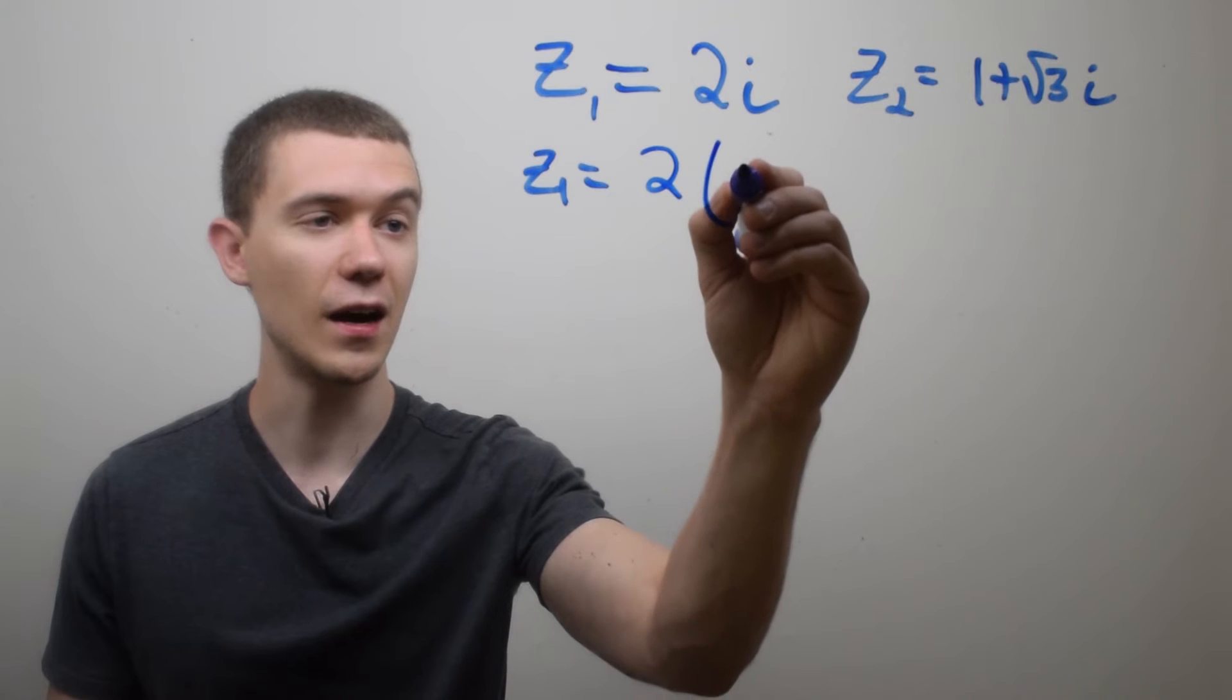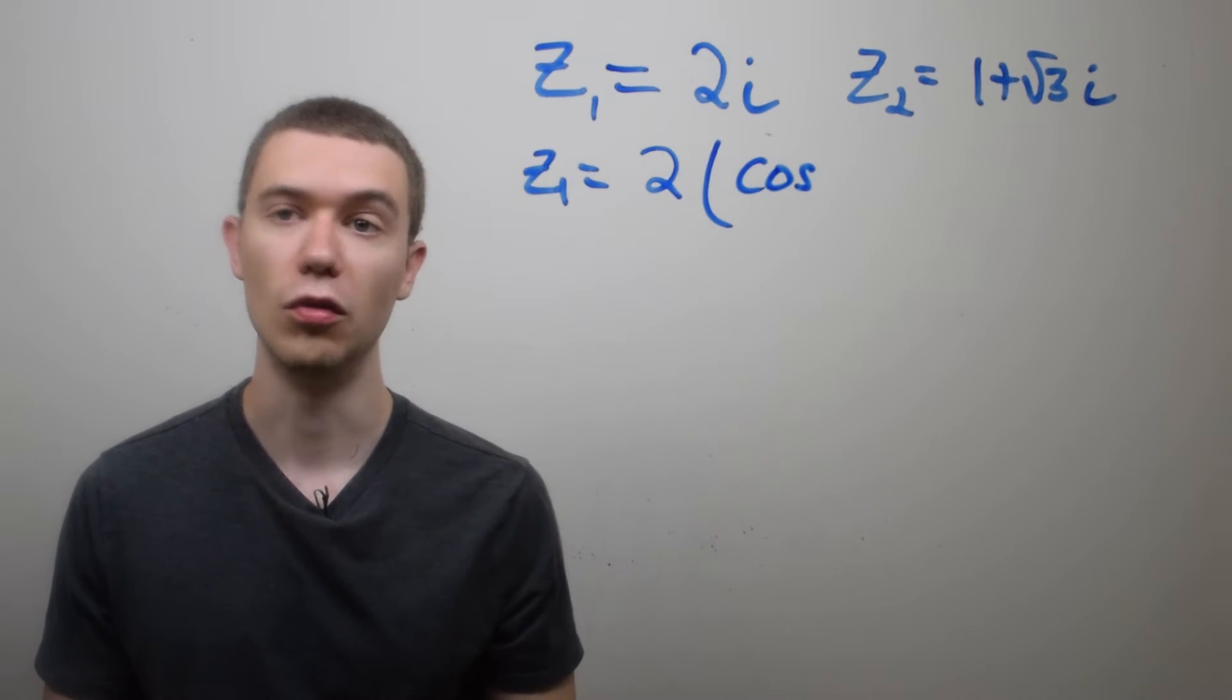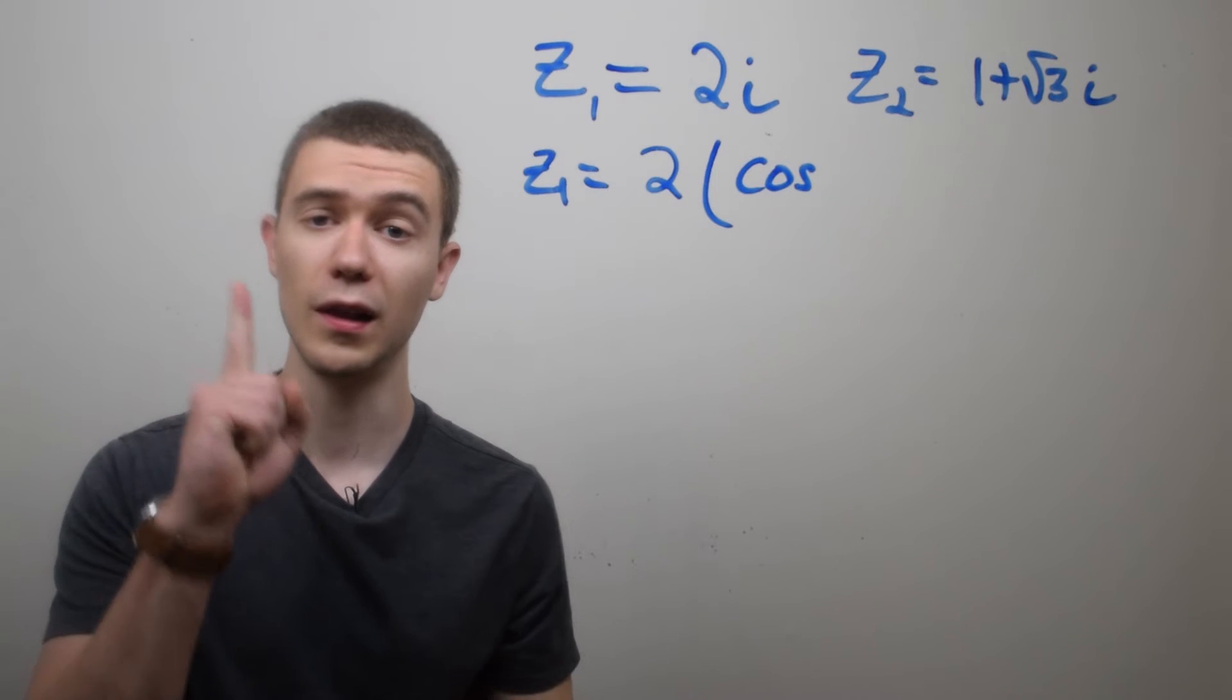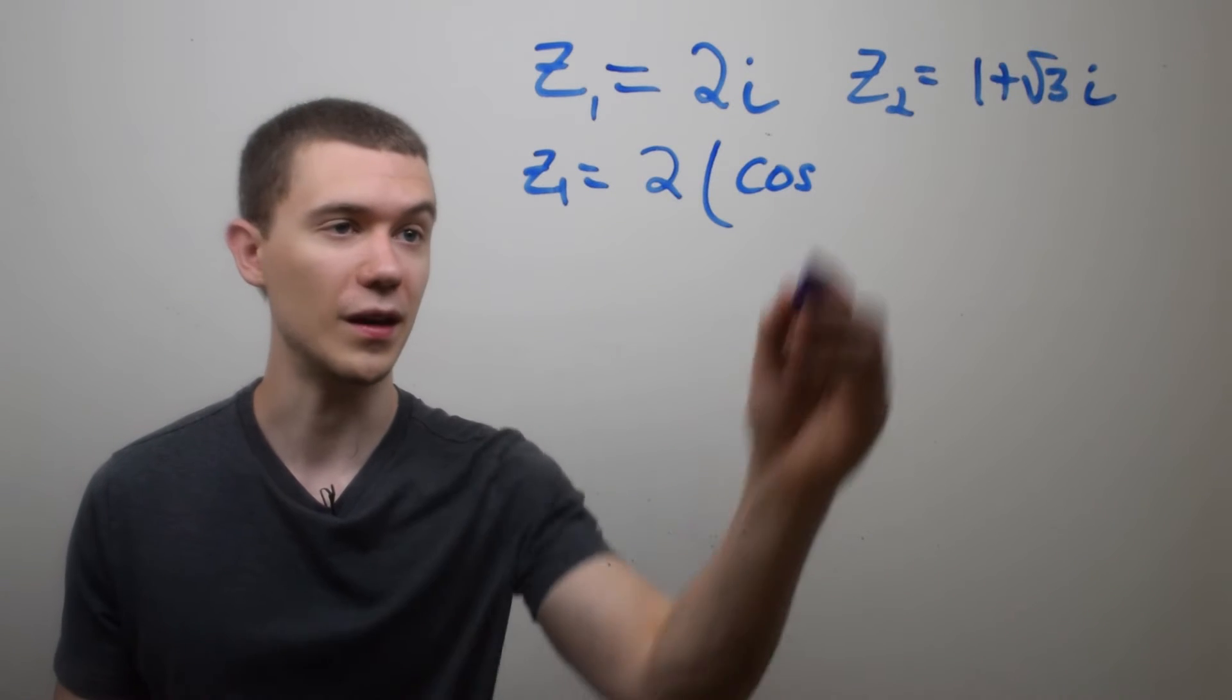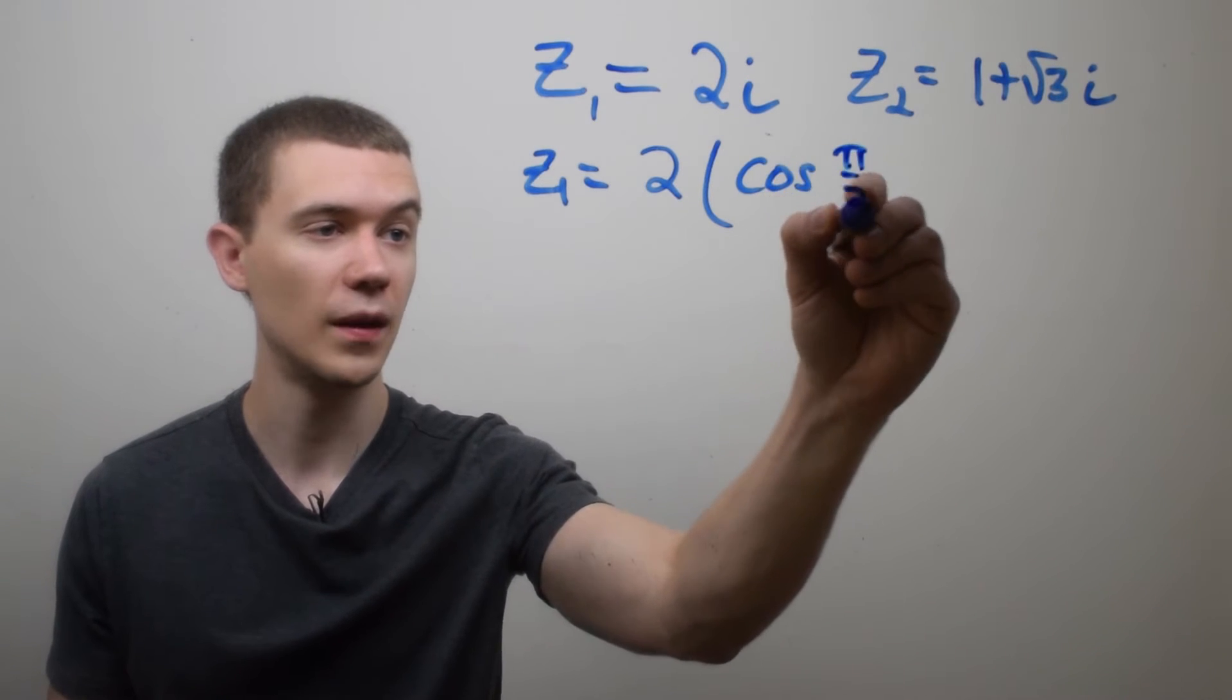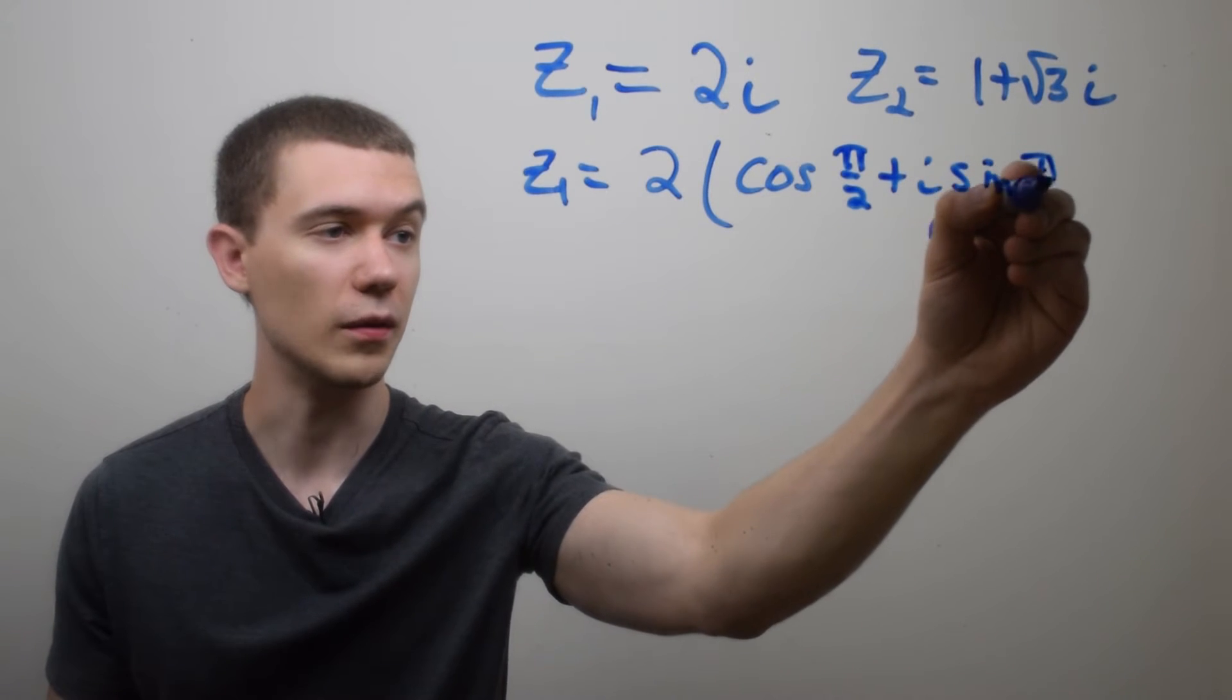And then it's times the cosine of the argument of 2i. If you think about 2i, 2i lies on the y-axis, the vertical axis. So its argument is π/2. And that will be plus i times sine of the same argument, π/2.